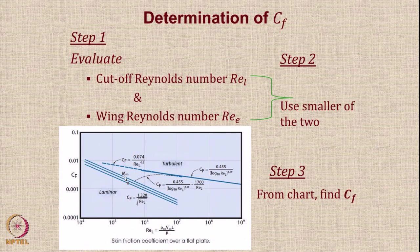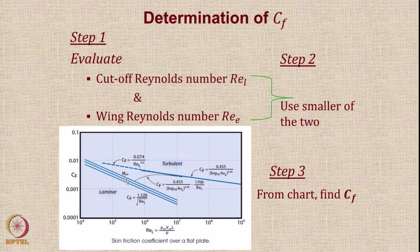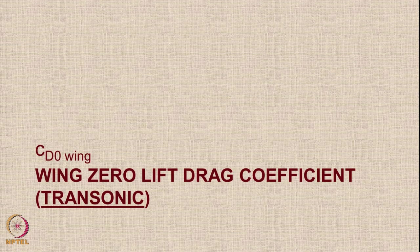For determining CF, there are two steps. First, calculate the cutoff Reynolds number Re_L and the wing Reynolds number Re. Then choose whichever is smaller — that value is used in the graph. There are two bunches of lines: one single line for turbulent flow and three lines for laminar flow. Depending on the value of M∞, you use it to calculate the value of CF. That was for the calculation of CDO wing for the subsonic case, and the procedure is quite similar to what is used for transport aircraft.